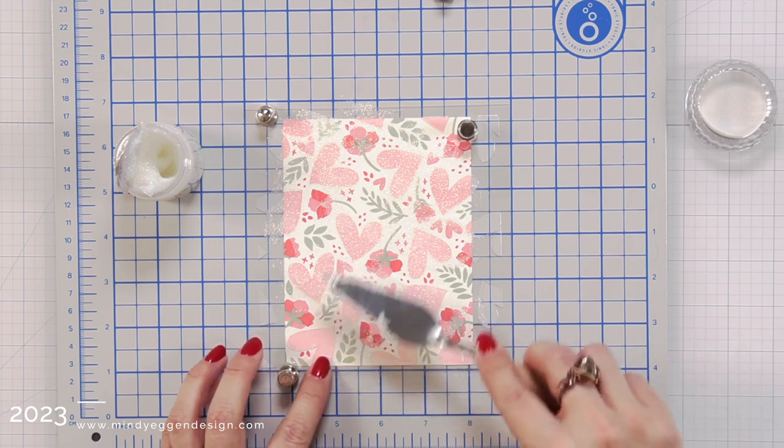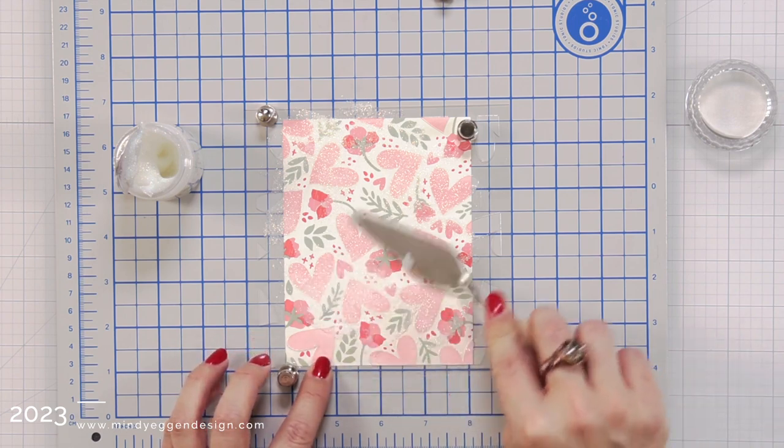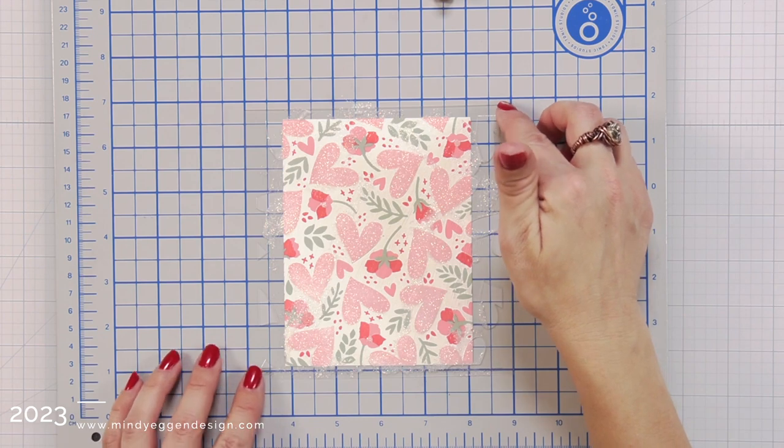So making sure that those hearts are completely covered, and then I can kind of go through, smooth that out and scrape off any excess.